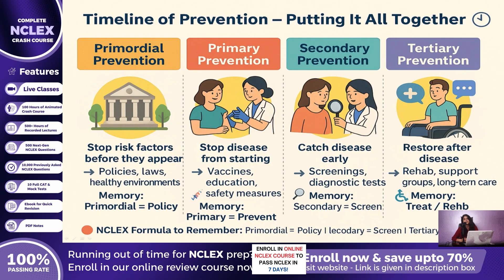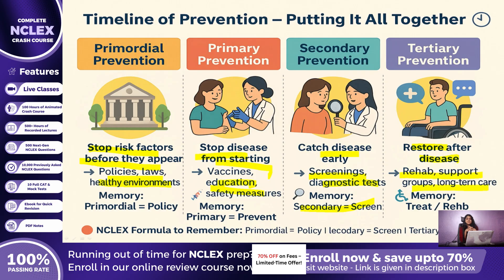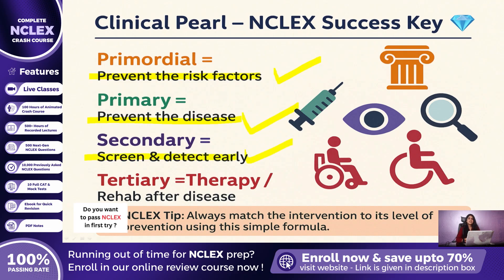Back to topic — putting it all together. Timeline of Prevention: Primordial prevention — stop the risk factors from ever appearing; policies, laws, healthy environments. Primary prevention — stop the disease from starting; vaccines, education, safety. Secondary prevention — catch the disease early; screenings, diagnostic tests. Tertiary prevention — restore after disease; rehab, support groups, long-term care. Quick formula: Primordial equals policy. Primary equals prevent. Secondary equals screen. Tertiary equals treat/rehab. Clinical Pearl: Primordial equals prevent the risk factors. Primary equals prevent the disease. Secondary equals screen and detect early. Tertiary equals therapy/rehab after disease.